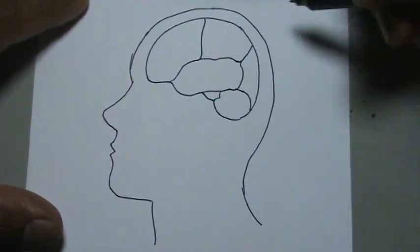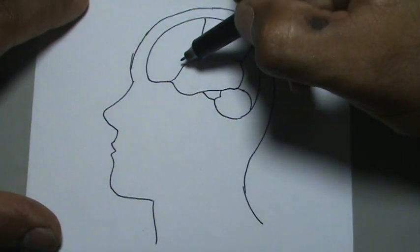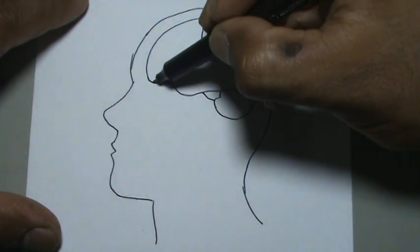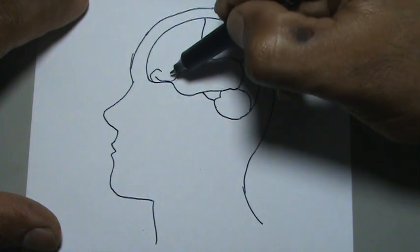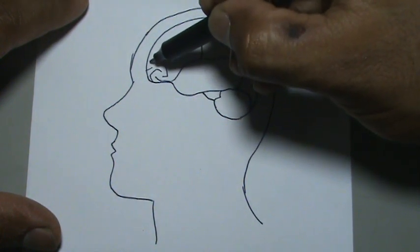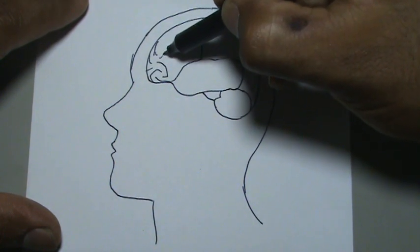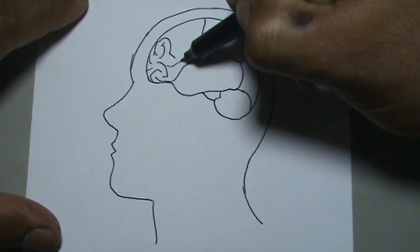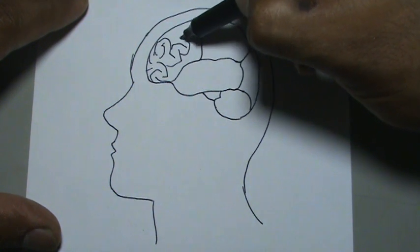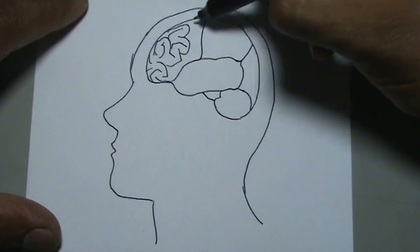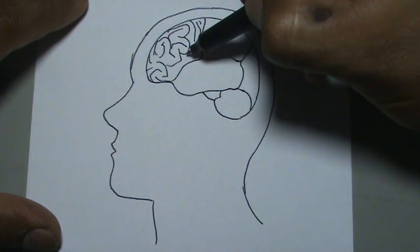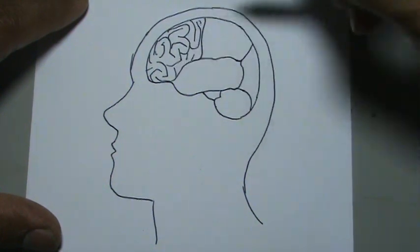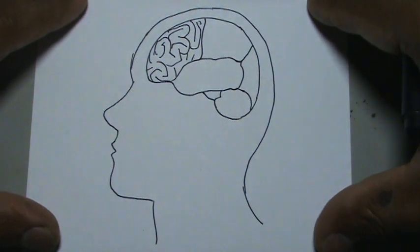Ahora vamos a hacer lo que es como la textura del cerebro, o ese aspecto, como si fueran puros organitos, dibujamos rayitas así para darle ese aspecto, como si fueran varios órganos unidos, hacemos esa textura así.